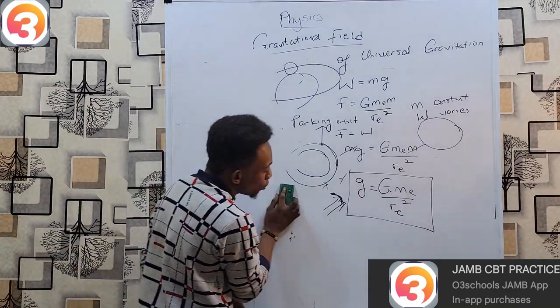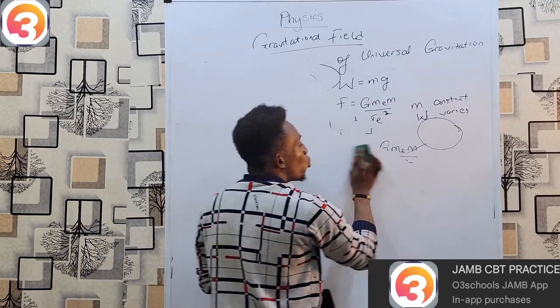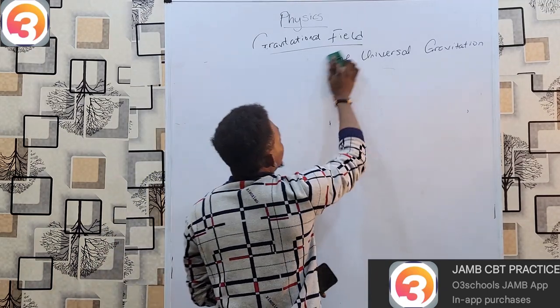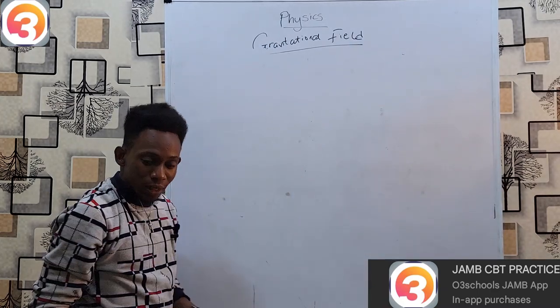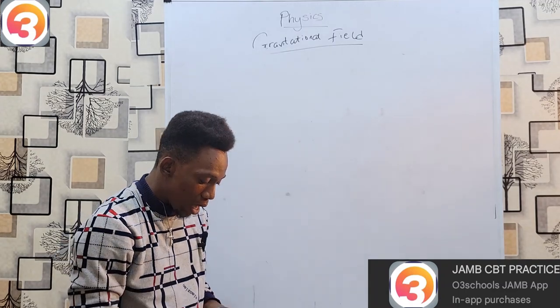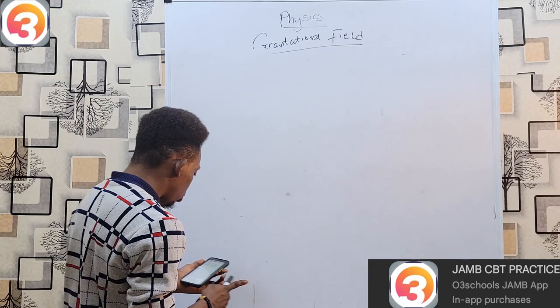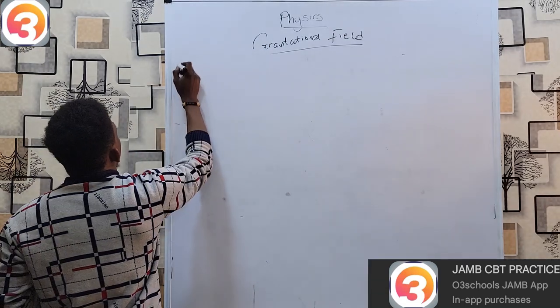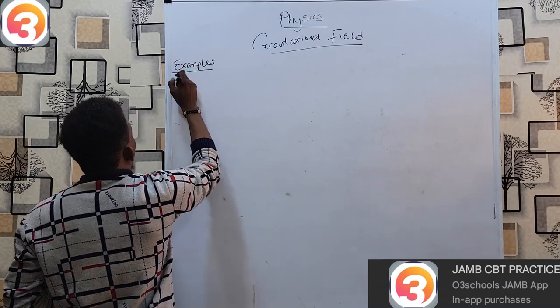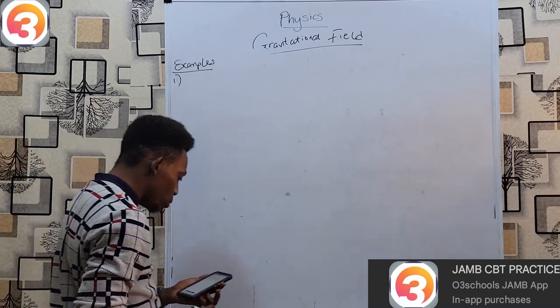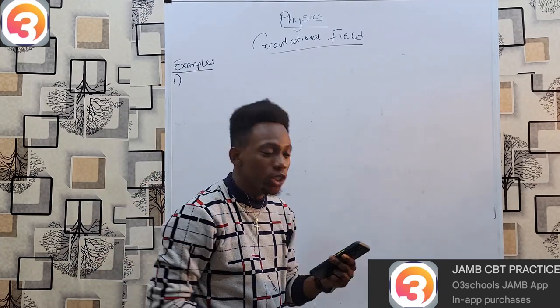With this, we can actually now go to our JAMB app and pick out questions on gravitational field. That is one of the cool features of this app that you are able to look for questions in the area you want to study particularly, instead of just going around and searching randomly. You can actually search for the keywords and you'll be able to find questions that have to do with the topic you are dealing with. So let's start.